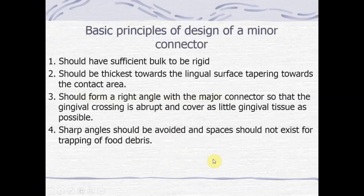Moving to the principles of design of a minor connector, there are four main principles. First, it should have sufficient bulk to be rigid. Second, it should be thicker towards the lingual surface, tapering towards the contact area. Third, it should form a right angle with the major connector so that the gingival crossing is abrupt and covers as little gingival tissue as possible. Fourth, sharp angles should be avoided and spaces should not exist for trapping of food debris.